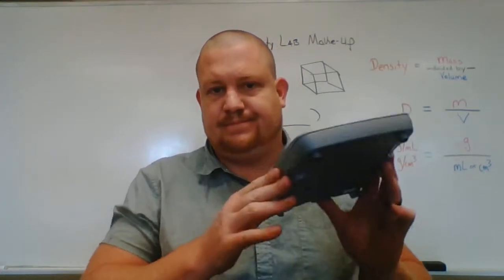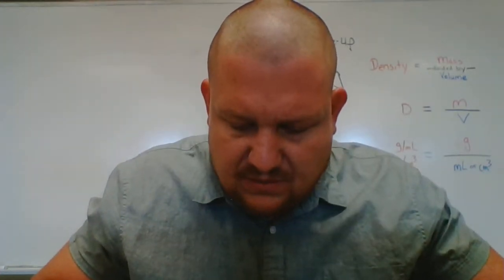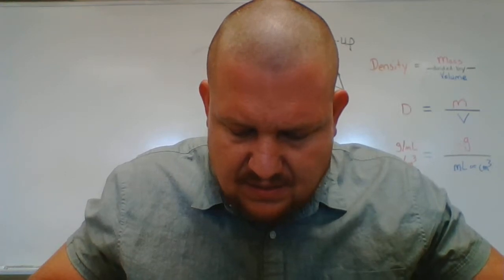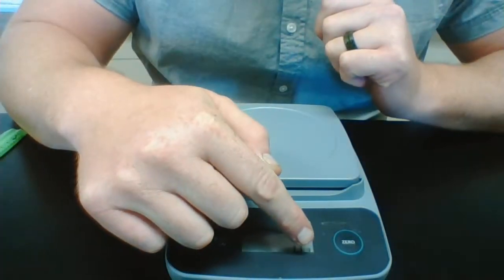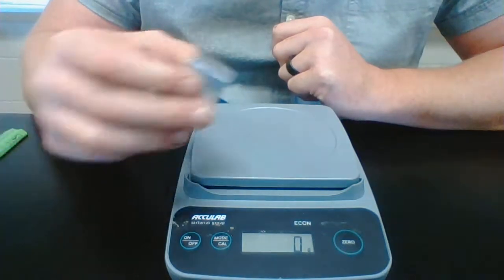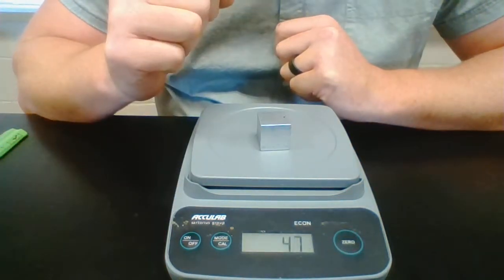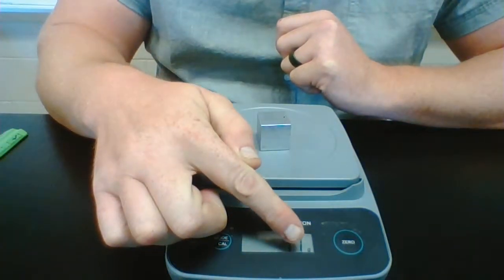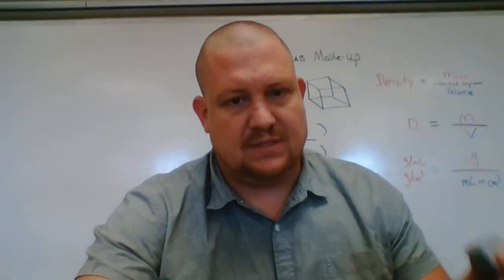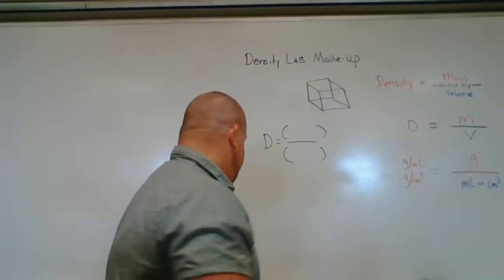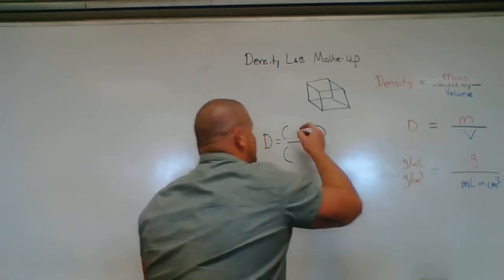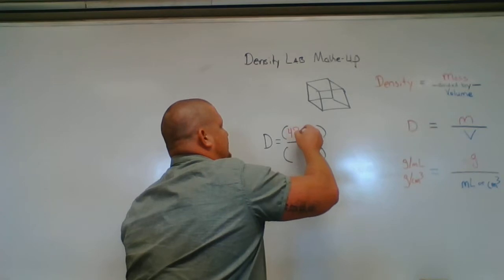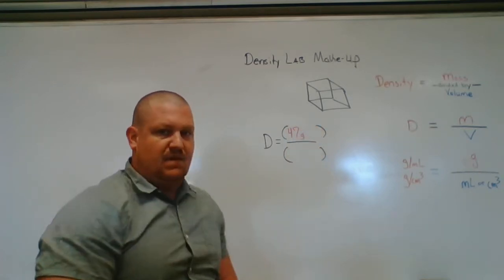To find the mass, we use the scale. Let me turn it on — there we go, zero grams. Now we place our aluminum block onto the scale and we see we are at 47 grams. So mass equals 47 grams, and we're going to plug that in for our mass.